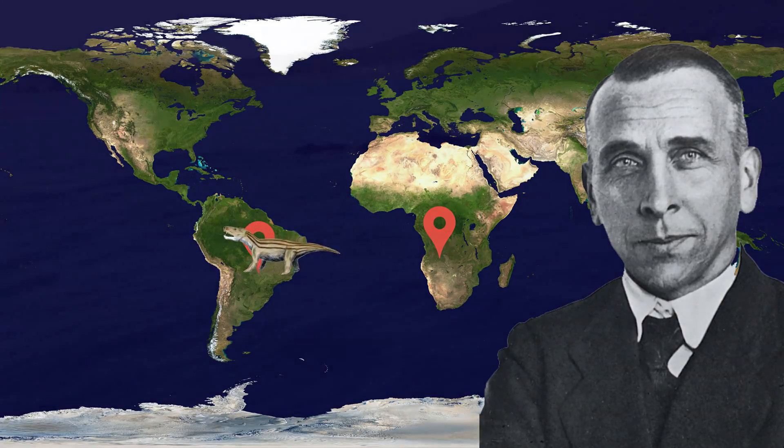Wegener began reading all the scientific articles he could find and was surprised to discover the crazy ideas that some scholars proposed to justify how species could have traveled from one continent to the other. It was proposed by some that animals had simply swam across the entire ocean. This is something that could be true for some land species, like wild boars.